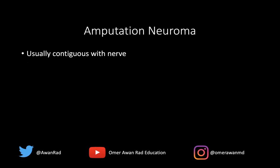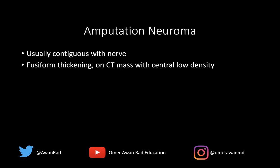On imaging, this is usually contiguous with a nerve — typically the sciatic nerve or any nerve that was transected. You get fusiform, mass-like thickening that presents with low density on CT, appearing as fluid Hounsfield units with central low density. It is typically fusiform and contiguous with where you'd expect the nerve to occur. Enhancement can often be variable, ranging from no enhancement at all to some heterogeneous enhancement within the amputation neuroma. Always look for an amputation neuroma in a patient that's had an amputation, particularly if it's in the location of the actual nerve.